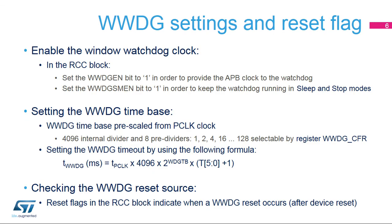To enable the window watchdog clock, the corresponding window watchdog enable bit in the RCC block must be set to 1. Note that once the APB clock for the watchdog is enabled, the application cannot disable it — only a system reset can disable the watchdog clock. A low power enable bit can be set as well if the application wishes to keep the window watchdog activated even if the CPU is in sleep or stop mode.